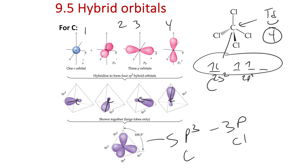One key point: when in sp3 hybridization, there are no leftover p orbitals. All the p orbitals for carbon are used. When in tetrahedral geometry, there are no leftover p orbitals for pi bonding. For boron on the previous slide, it has a leftover p orbital that can overlap with another p orbital on an attached atom to make a pi bond. For something like CO2, which is linear, sp orbital one way and sp orbital the other way leaves two leftover p orbitals that can make two different pi bonds. Let's look at pi bonding.